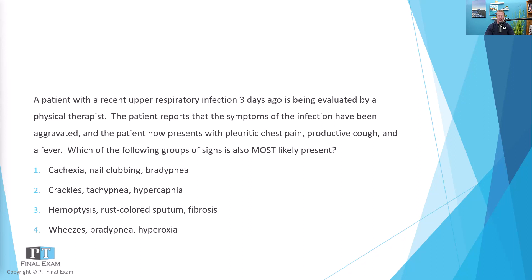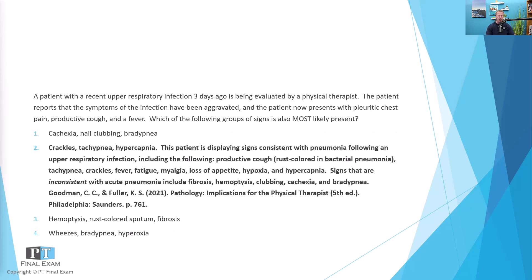This question is dealing with someone who has had a recent upper respiratory infection. A lot of times this is the classic history for someone who's developing pneumonia — to have the symptoms be aggravated and then present with more severe symptoms. The correct answer is option number two: crackles, tachypnea, and hypercapnia. This is a mix-and-match style question where you have to identify the correct options among several incorrect options. The key with identifying incorrect options is: if it's partially incorrect, then it's totally incorrect.